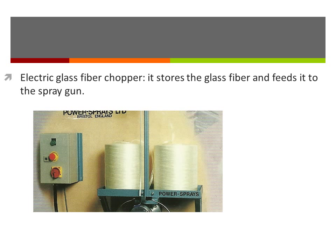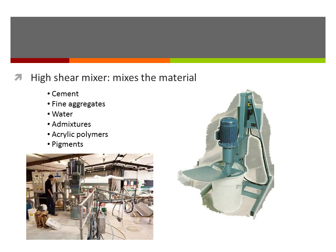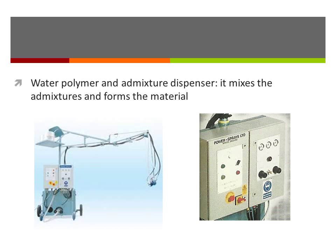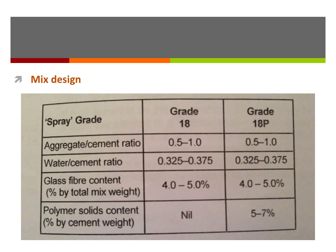The electric glass fiber chopper chops the glass fiber and feeds it to the spray gun. The water, polymers, and admixtures dispenser mixes the admixtures and forms the material. The mix design comparison between Grade 18 and Grade 18B shows their only difference is in the polymer solid content as a percentage by cement weight — in Grade 18 it is 0%, while in Grade 18B it is 5 to 7%.